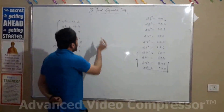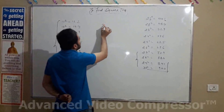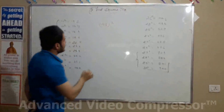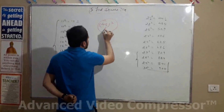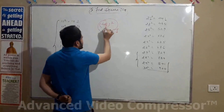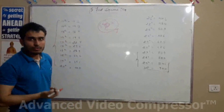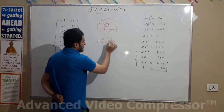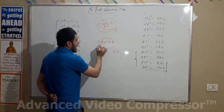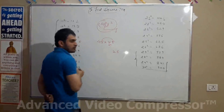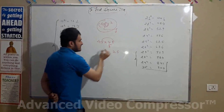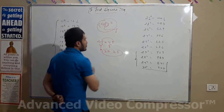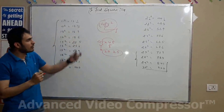Now let's take another example: what is the square of 45? For a number whose unit digit is 5, it is very simple. 45 × 45: 5 × 5 = 25, write 25. Then add 1 to the tens digit: 4 + 1 = 5, and multiply 4 × 5 = 20. So the square of 45 is 2025.